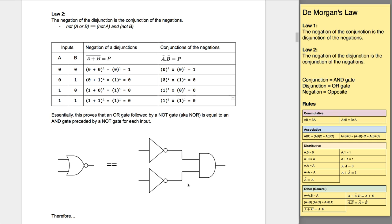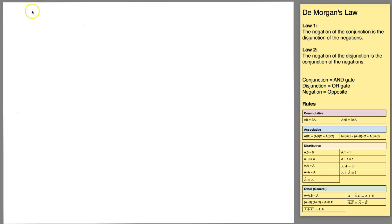We're going to move on now and take a look at some of the other rules. There are common rules here which you need to be aware of. There are three laws in Boolean algebra that are the same as ordinary algebra.